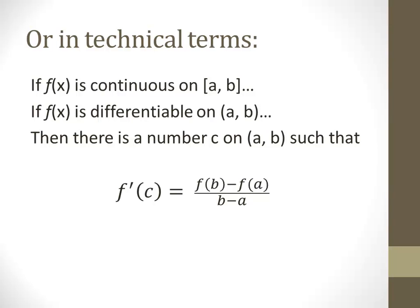Basically, what the mean value theorem is saying is that if we have a continuous interval that's differentiable, then there's going to be some point on that function where the tangent to the function is going to be parallel to the line that goes from A to B. The diagrams in the book on page 216 illustrate this visually.